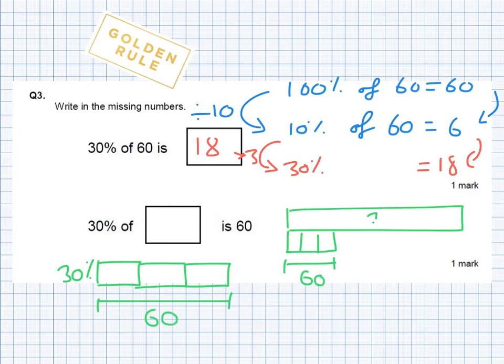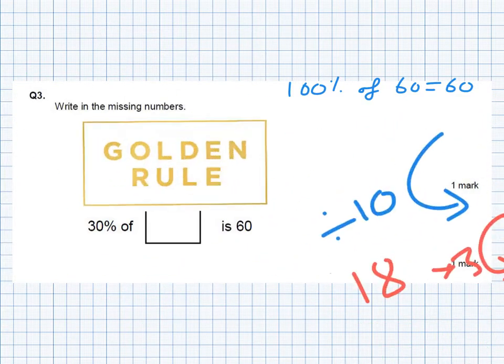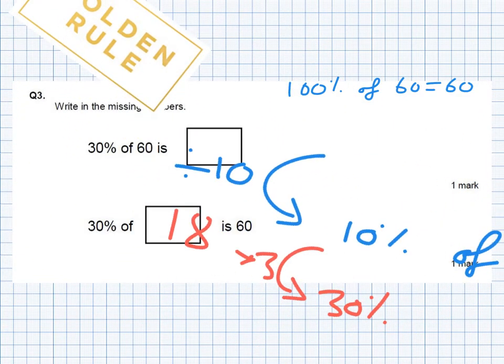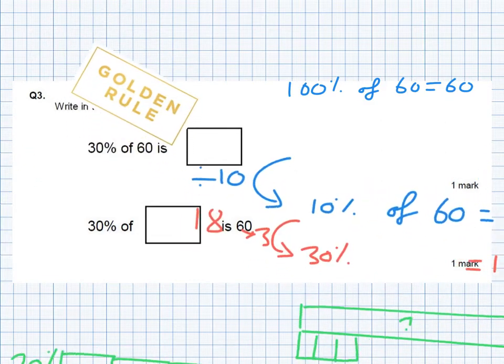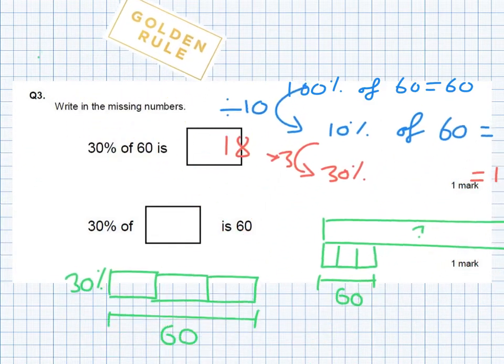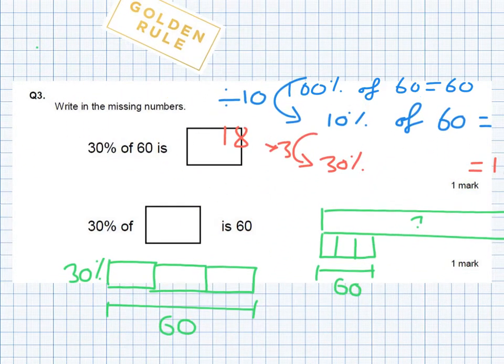So how do I find 10% because that is my golden rule. Always find 10% first. So I put it back. I know 60 is made up of three blocks of 10%. So I divide 60 by three, that will give me 10% here. So 60 divided by three is 20. I can check that by putting 20 in each block.